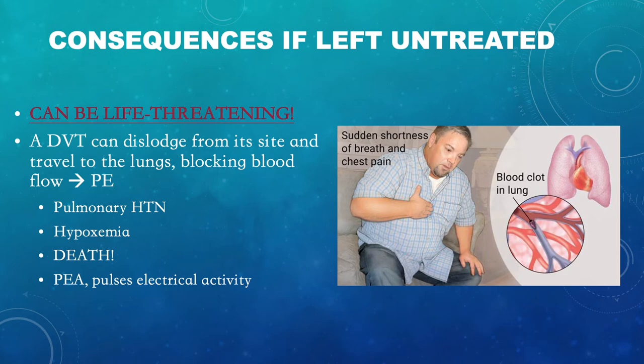A deep vein thrombosis can be dangerous and life-threatening if left untreated. The DVT can dislodge from the site and travel to the lungs, blocking blood flow, causing pulmonary hypertension, hypoxemia, pulseless electrical activity, and even death. This picture shows a male having sudden shortness of breath and chest pain, with the blood clot having dislodged and traveled to his lungs.